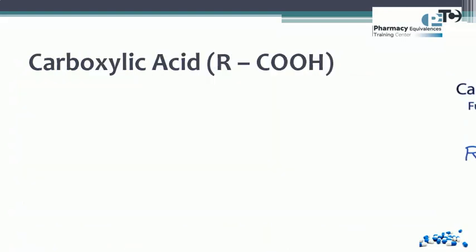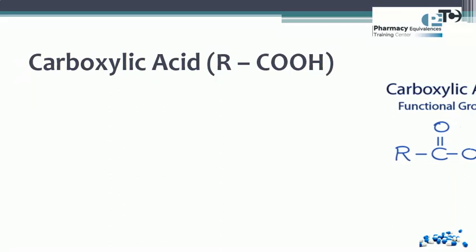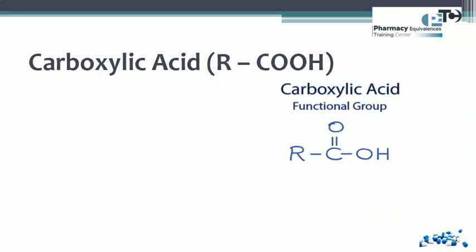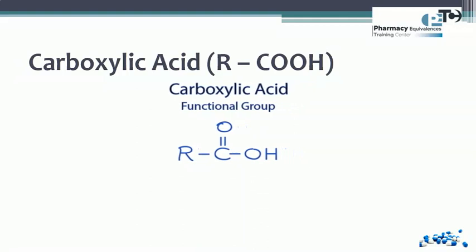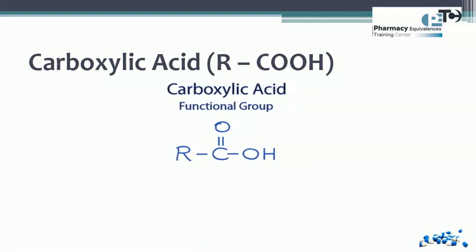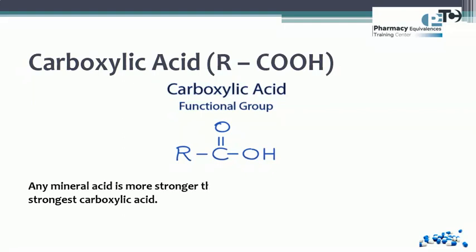The first group we will study is the carboxylic acid group. The carboxylic acid functional group is formed of a carbon attached by a double bond to oxygen and an OH group, so it is called COOH. Regarding acidity, any mineral acid like hydrochloric acid (HCl) is stronger than the strongest carboxylic acid.